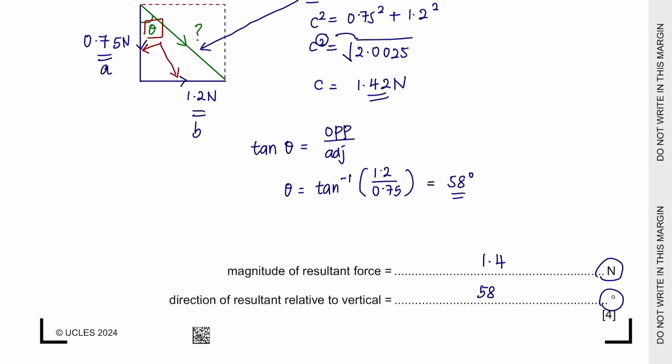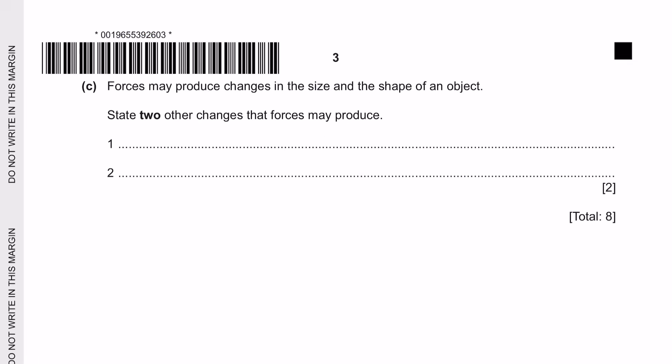As you can see, the units have already been provided. If they're not given, always include units in your final answer. For question part C, forces may produce changes in size and shape. Two other changes forces may produce are: change in direction, or change in speed or acceleration of an object.